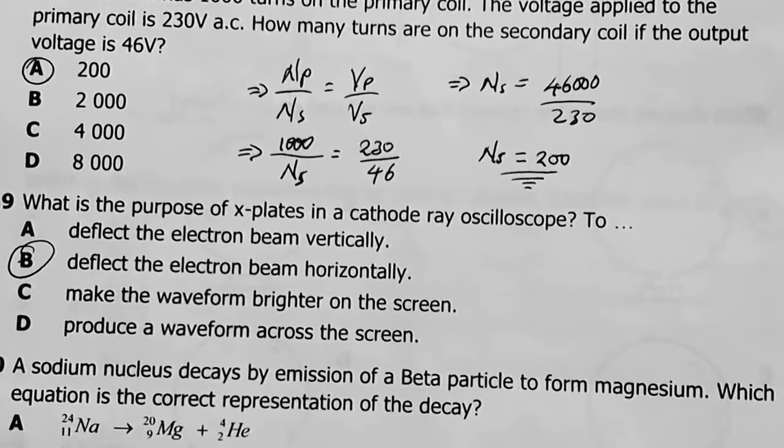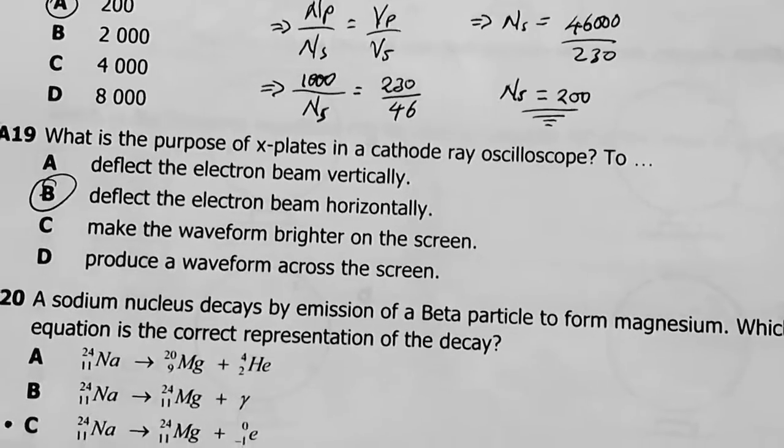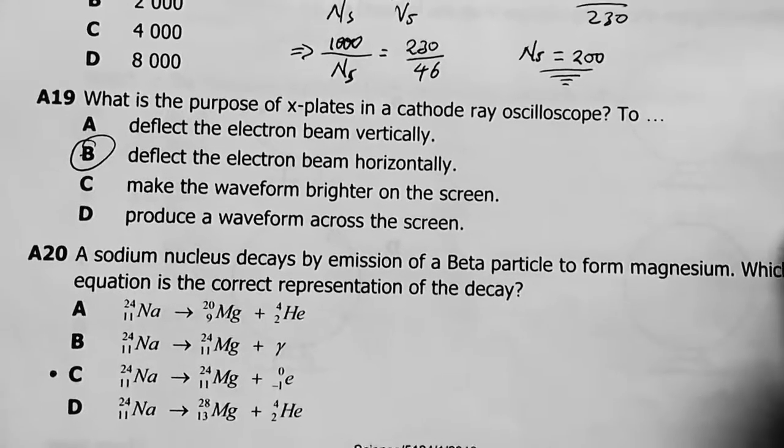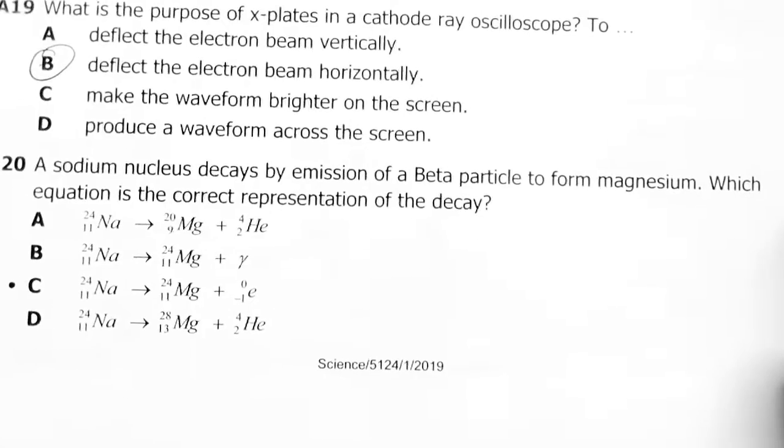Question 19: What is the purpose of X plates in the cathode ray oscilloscope? To deflect electron beams horizontally or side to side. Answer is B.